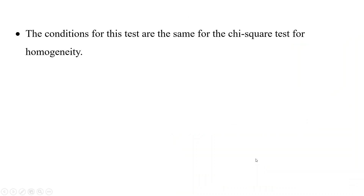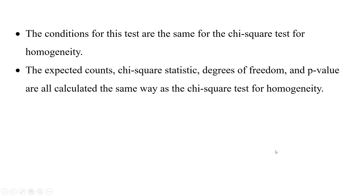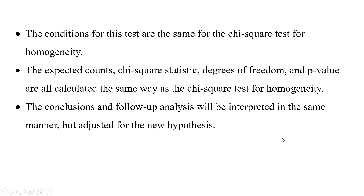After writing your null and alternative hypotheses, the conditions for the test are the same as the chi-square test for homogeneity. The expected counts, chi-square statistic, degrees of freedom, and p-value are all calculated the exact same way as in the homogeneity test. The conclusion and follow-up analysis are also interpreted similarly, but adjusted for the new hypotheses—meaning when examining which cells contributed most to the chi-square statistic, you frame it in terms of how the variables influence one another rather than distributional differences across populations.